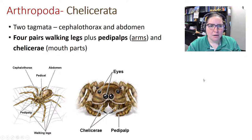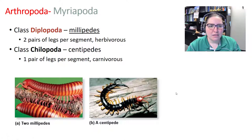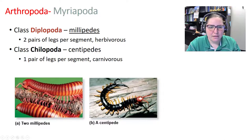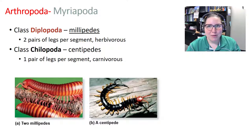Chelicerata are named for their chelicerae mouthparts. They have four pairs of walking legs — eight legs total — plus pedipalps like small arms. These are your spiders. Myriapoda includes millipedes and centipedes: millipedes are herbivorous with two pairs of walking legs per body segment; centipedes are carnivorous with one pair per segment.